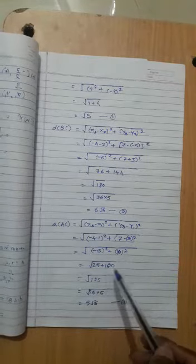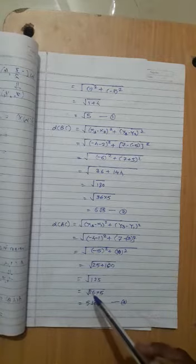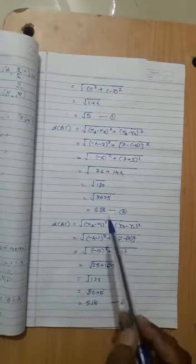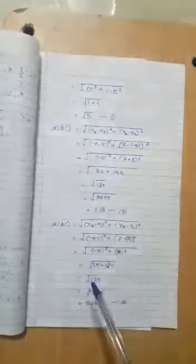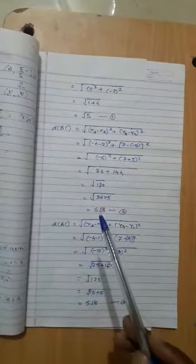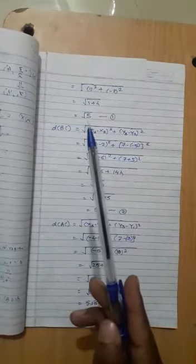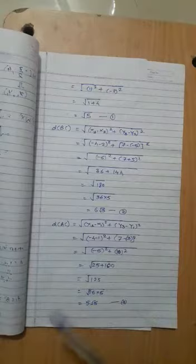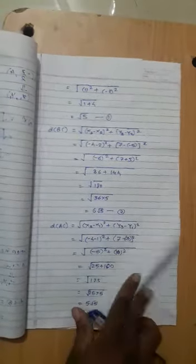Addition: 125. Factor: 25 into 5. Square root of 25 is 5, so 5 root 5. We have root 5 plus 6 root 5, which equals... wait, root 5 plus 5 root 5 equals 6 root 5.